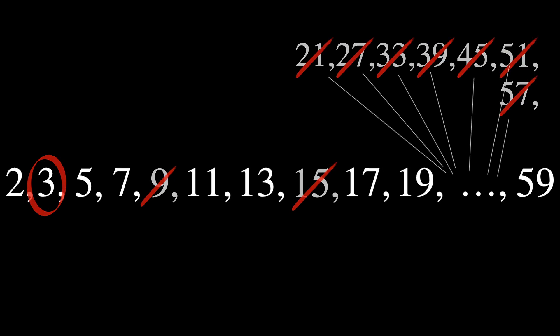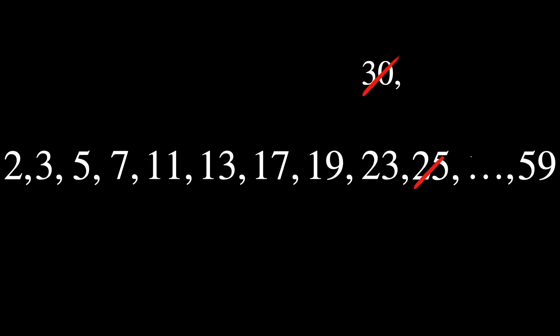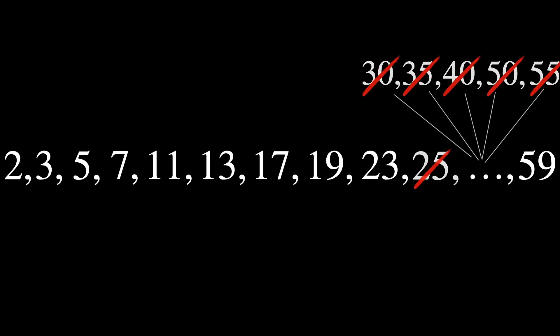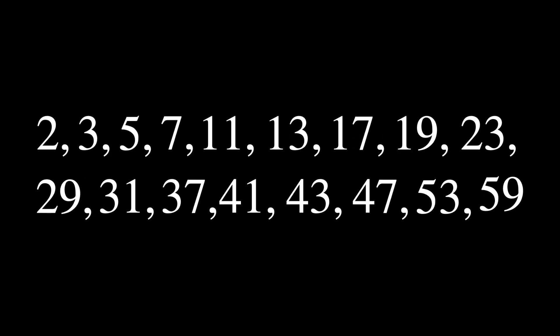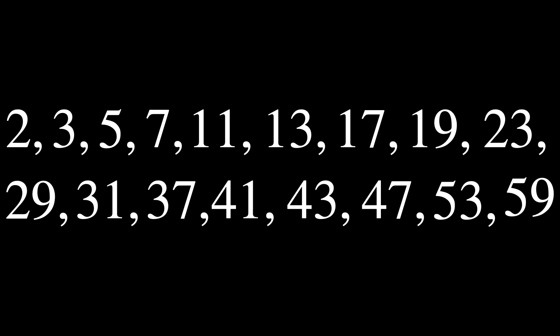Move to the next number that is not crossed out, 5. Circle it because it's a prime. Then cross out all multiples of 5. Continue this process with the other numbers until you fill the entire table. By the end of the process, the numbers that remain uncrossed are primes.